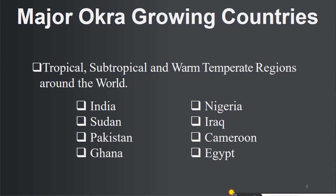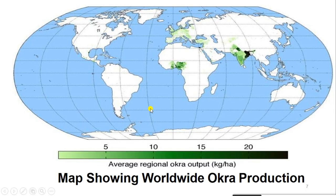Next is major okra growing countries. Tropical countries involved in okra cultivation include India, Sudan, Pakistan, Ghana, Nigeria, Iraq, and Egypt, likewise. The average regional okra output or production is shown here with color-wise distribution.